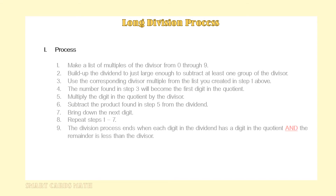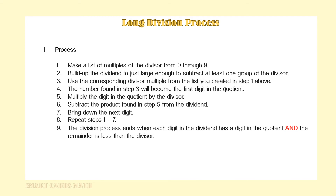In words, the long division process goes like this. First, we make a list of multiples of the divisor from 0 through 9. Then, using the build-up method, we build up the dividend to just large enough to subtract at least one group of the divisor. Next, we use the corresponding divisor multiple from the list created in step 1.